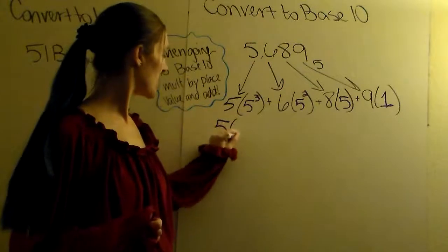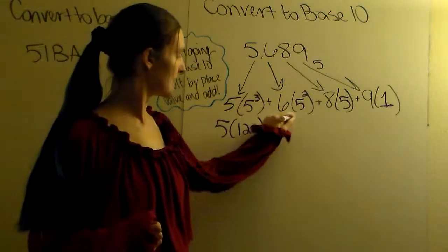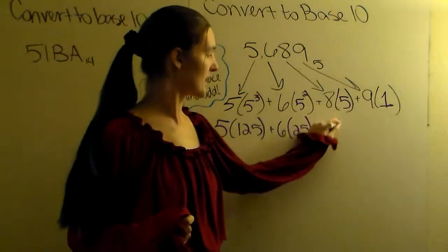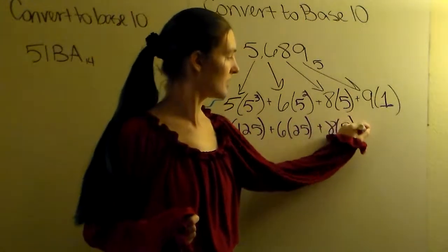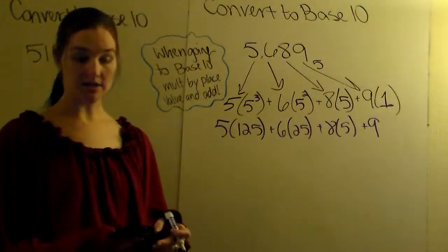So this gives us 5 times 125 plus 6 times 25 plus 8 times 5 plus 9. And what you're going to do is you're going to multiply them all together.